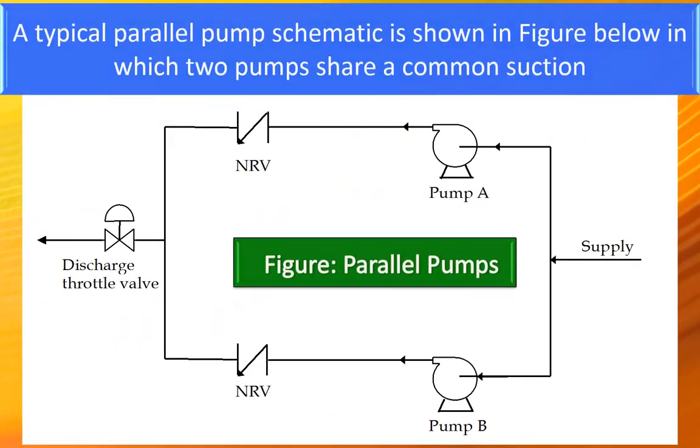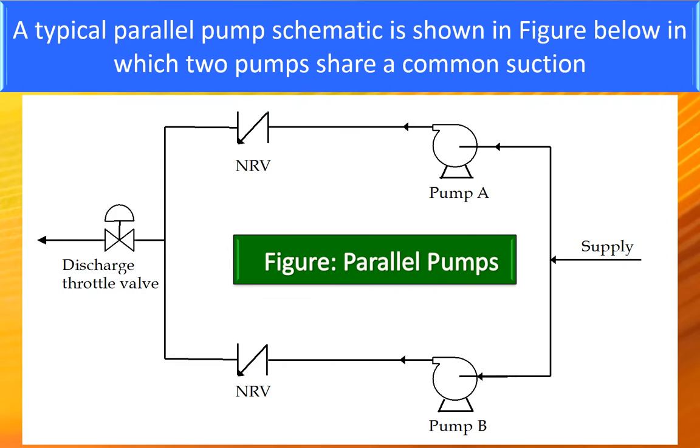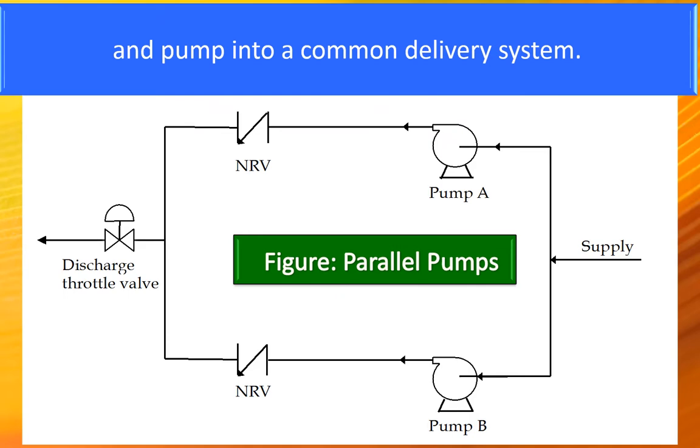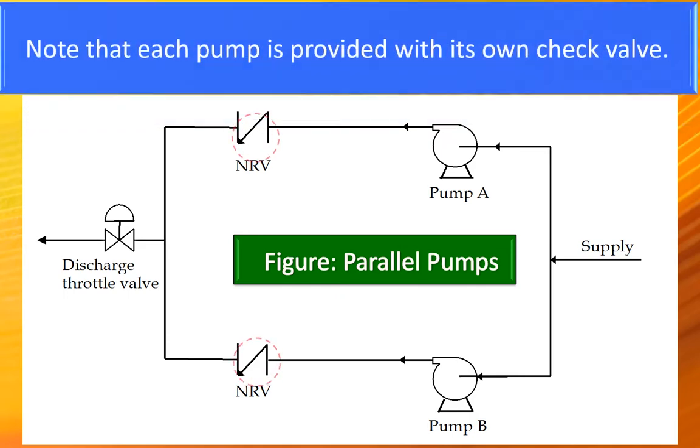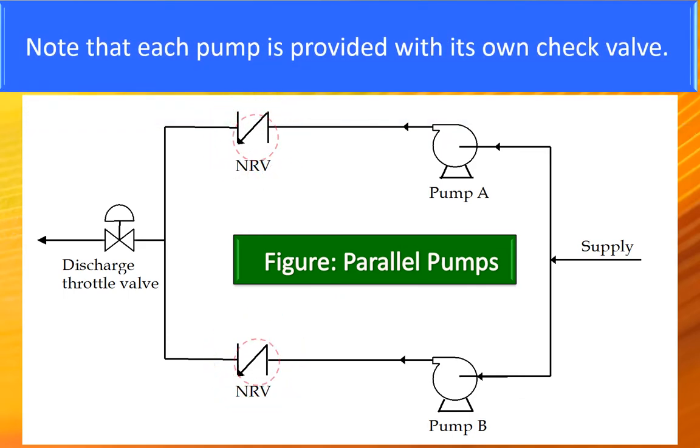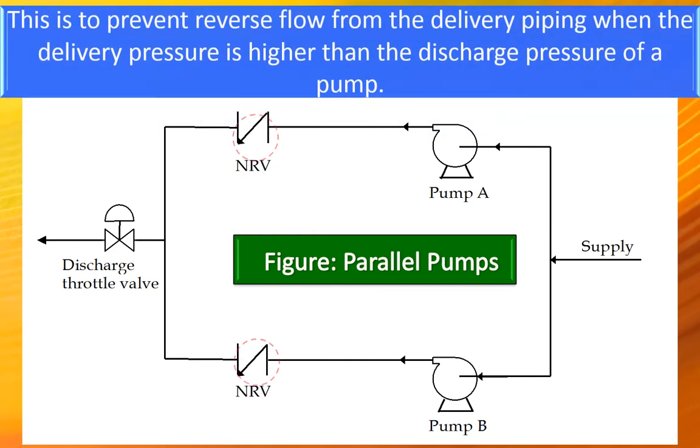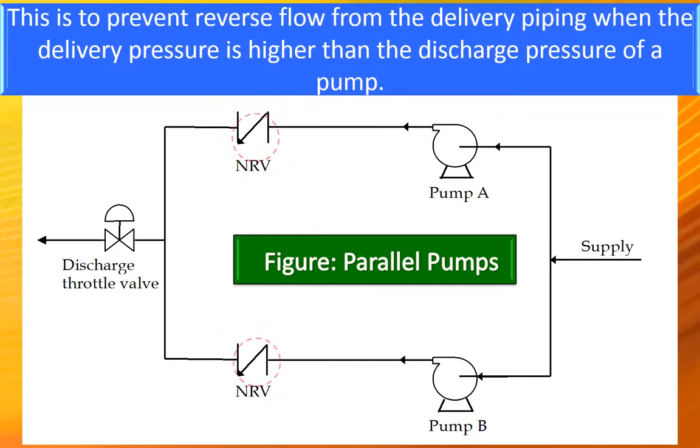A typical parallel pump schematic is shown in the figure below in which two pumps share a common suction and pump into a common delivery system. Note that each pump is provided with its own check valve. This is to prevent the reverse flow from the delivery piping when the delivery pressure is higher than the discharge pressure of a pump.